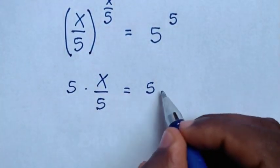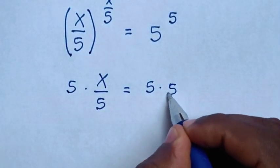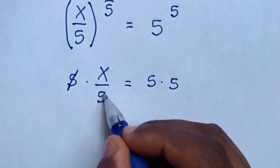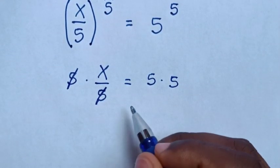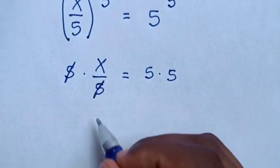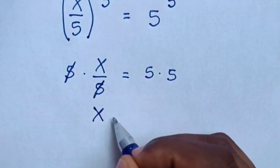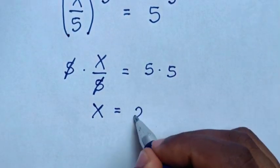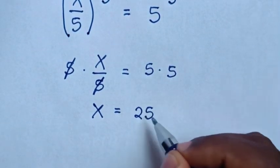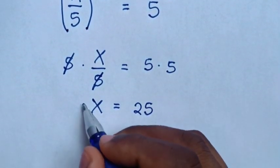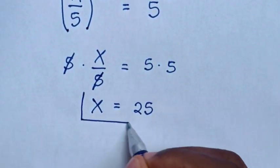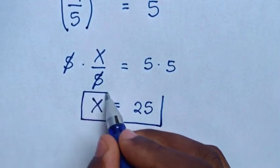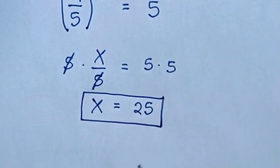Therefore x over 5 is equal to 5. Then to find the value of x, we'll multiply by 5 on both sides. So these will cancel, and it will be x is equal to 5 times 5, which is 25.